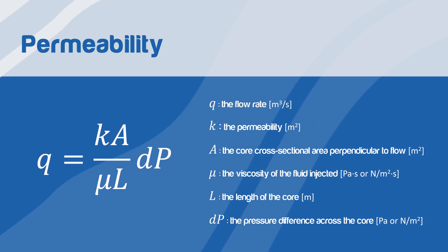Darcy's flow for single-phase liquid is expressed as Q equals KA over mu L delta P.